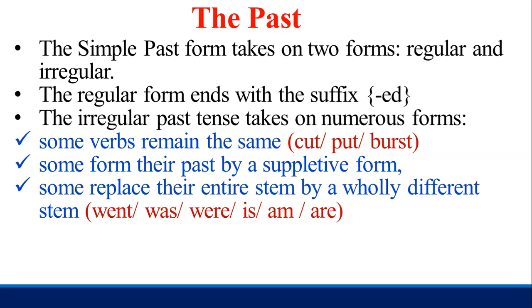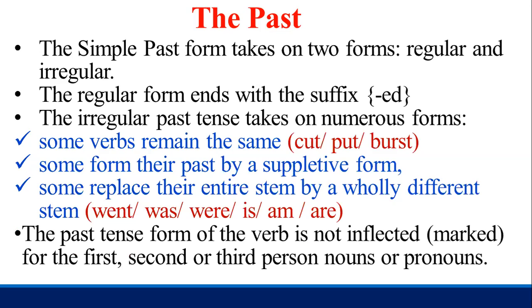Other irregular past forms include: was, were, is, am, are, and so on. The past tense form of the verb is not inflected — just marked — for the first, second, or third person nouns or pronouns. It doesn't just choose any person in the sentence.